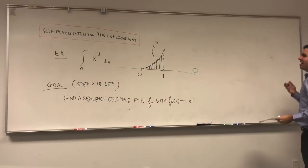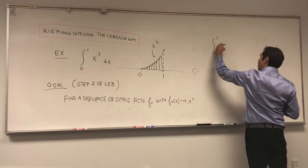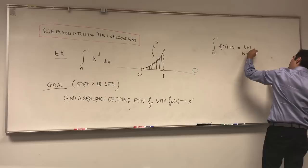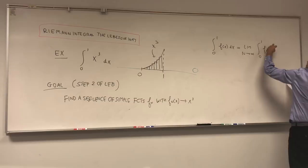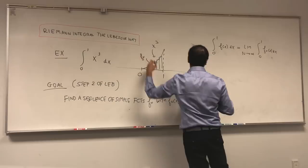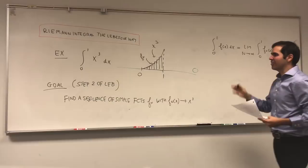And why is that useful? Because then, the Lebesgue integral of f of x dx will then be just a limit of the integrals of the simple functions fn of x dx. In other words, once you evaluate this fn of x, if you take the integral and take the limit, it gives you your integral of x cubed.